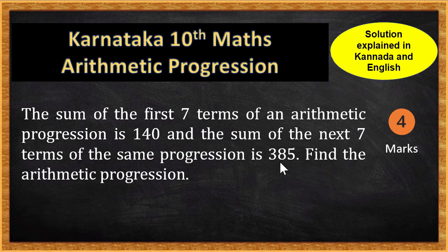This is the interesting bit. Usually they give first 7, first 14, first 20, first 30. But here they have split it differently.